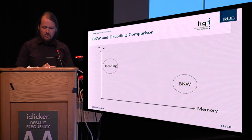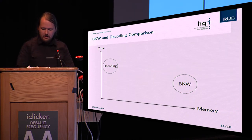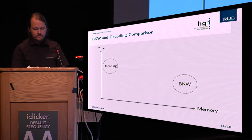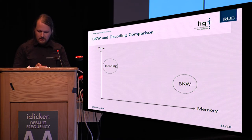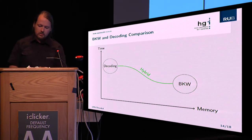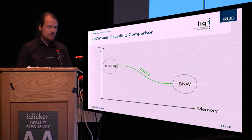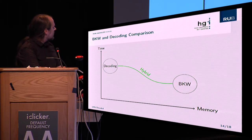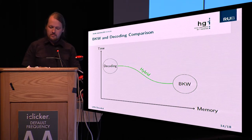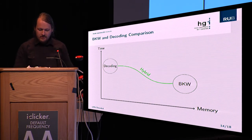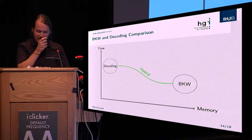The hybrid approach is very good for actual experiments. If you want to solve an instance with k = 300, you can't use BKW due to memory, but if you just use decoding you'd waste available memory. With this hybrid, you can use all available memory and get better running time than decoding alone, while the algorithm actually remains applicable — unlike BKW for large instances.